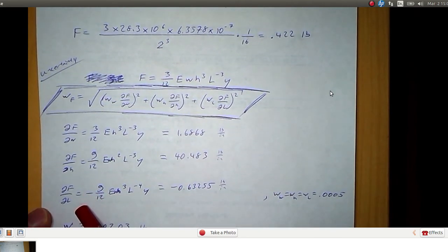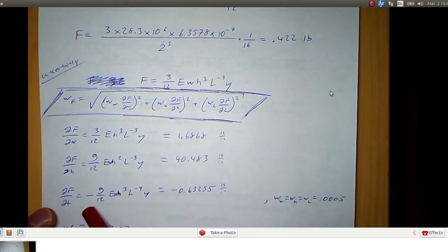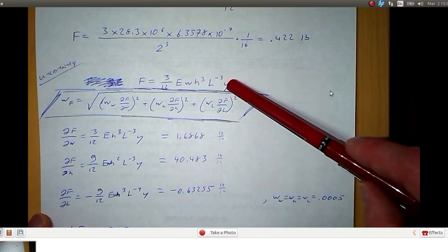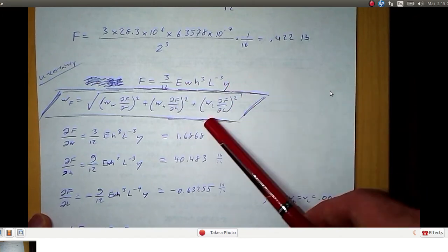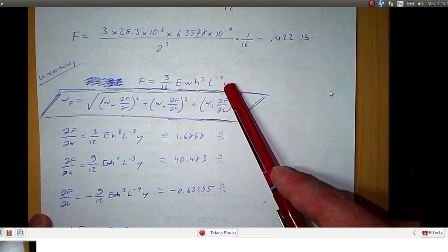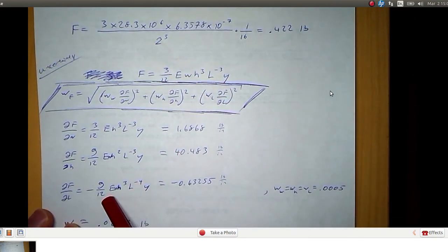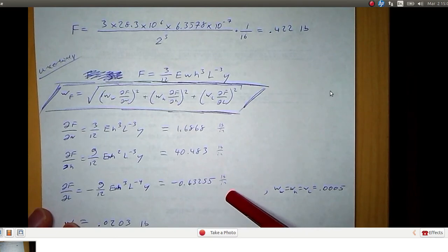The partial derivative of force with respect to height comes out to be 40.48 pounds per inch. And here is the partial derivative of force with respect to length. So partial derivative of force with respect to length. We take the derivative of this expression with respect to L, treating all these other terms as constants. So L is the only variable here in this partial derivative. So we have negative 9 twelfths E times W H cubed times L to the negative fourth times Y. And that ends up being negative 0.633 pounds per inch.